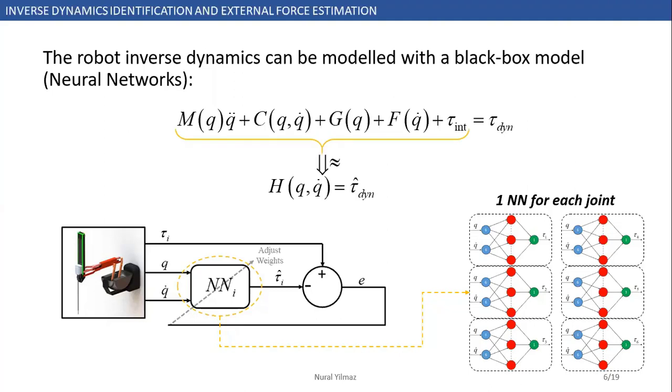Here, we want our neural network to learn the robot dynamics depending on the position and velocity signals. As you see in the figures, for more accurate results, each joint owns its neural network. Therefore, we don't need to normalize the data.